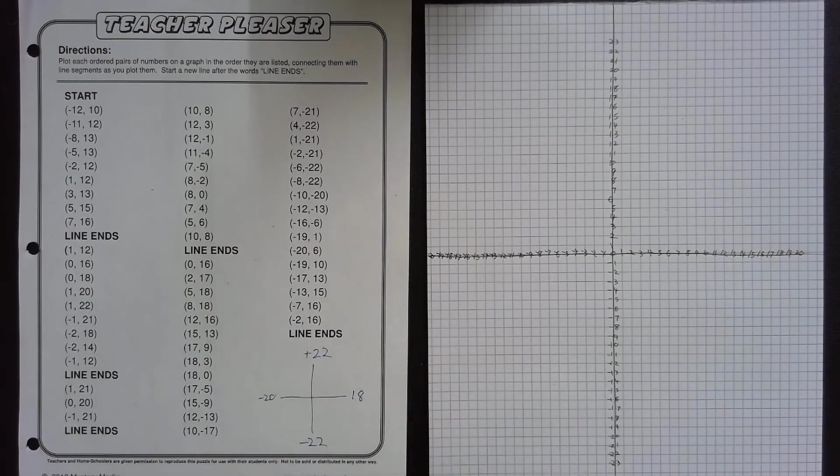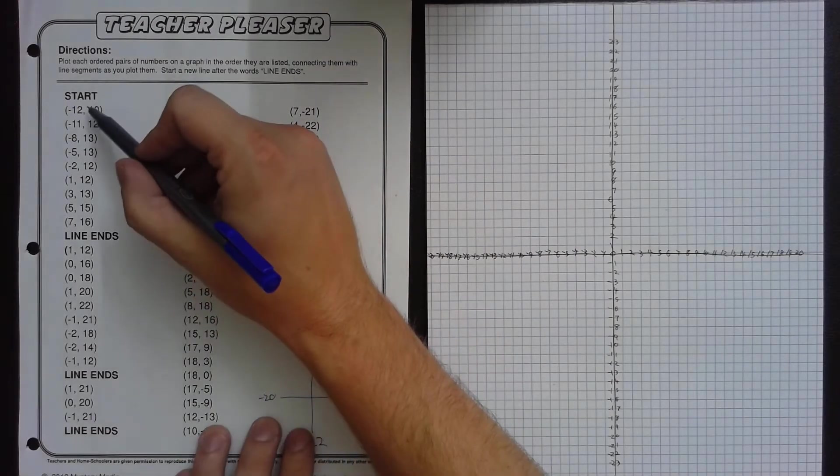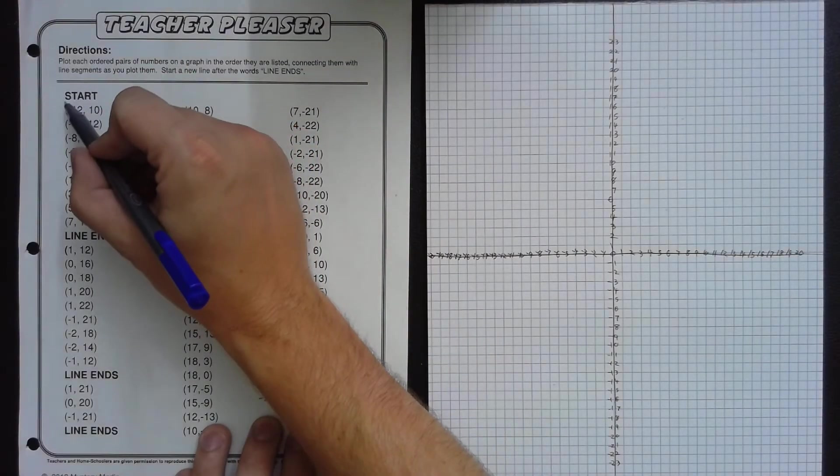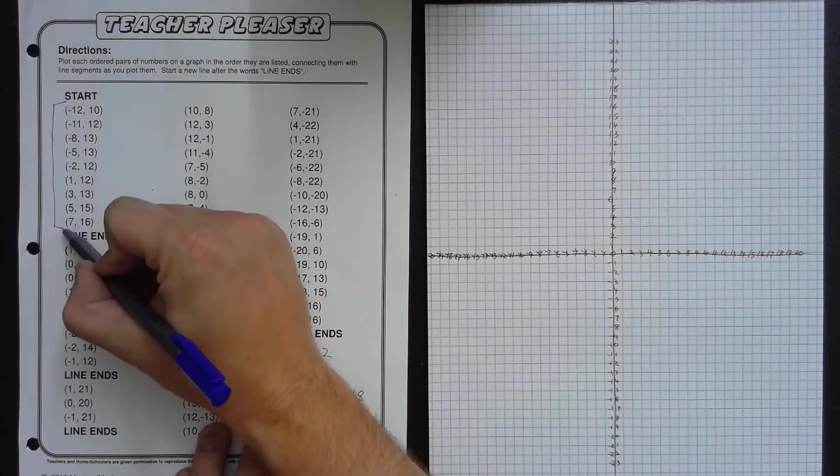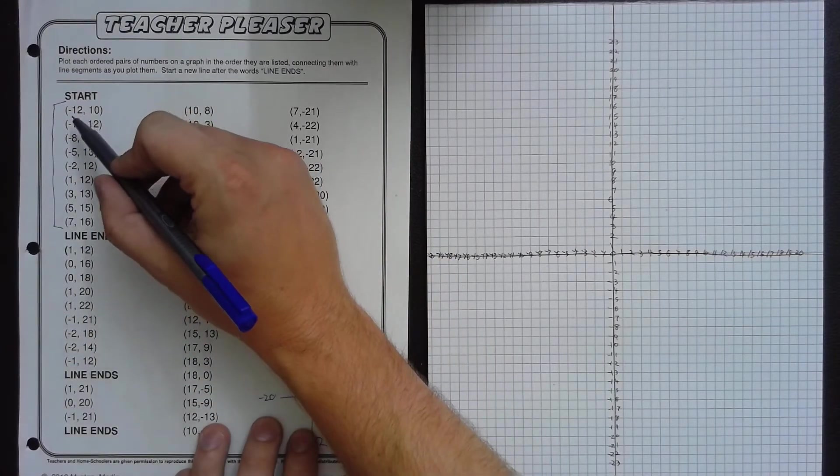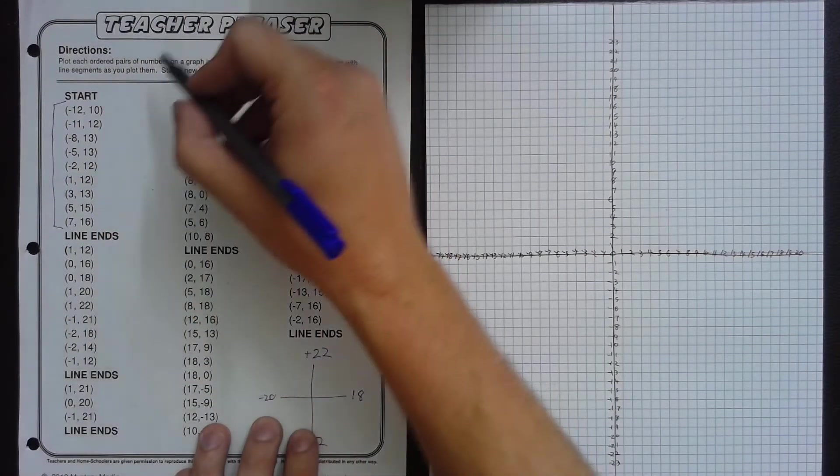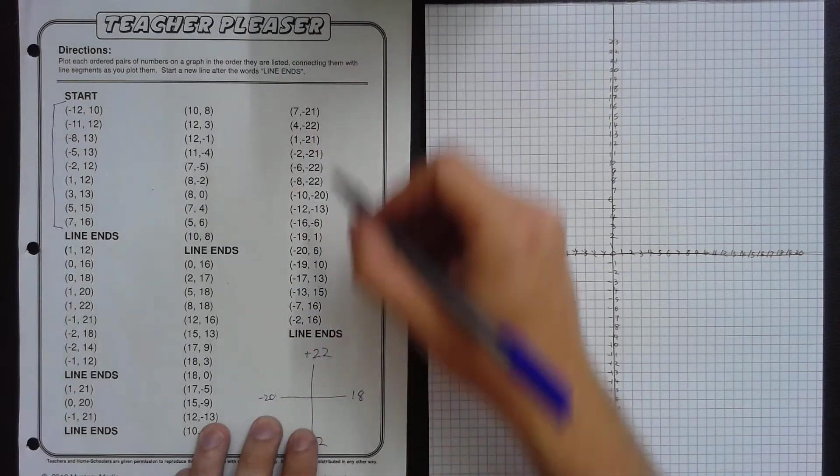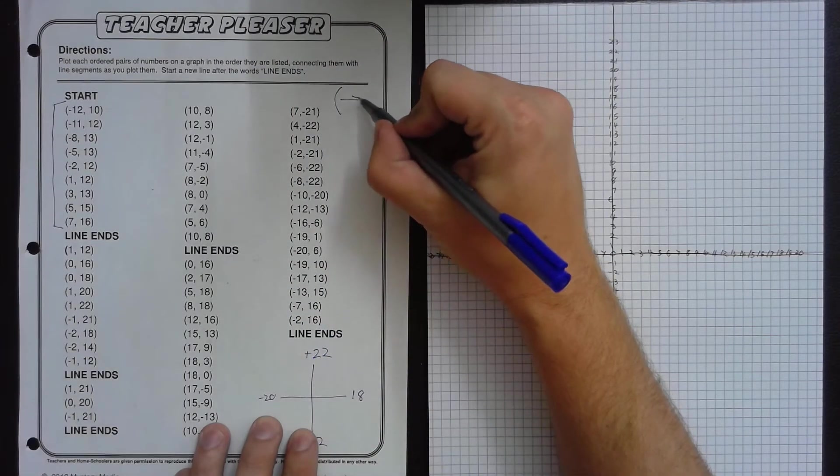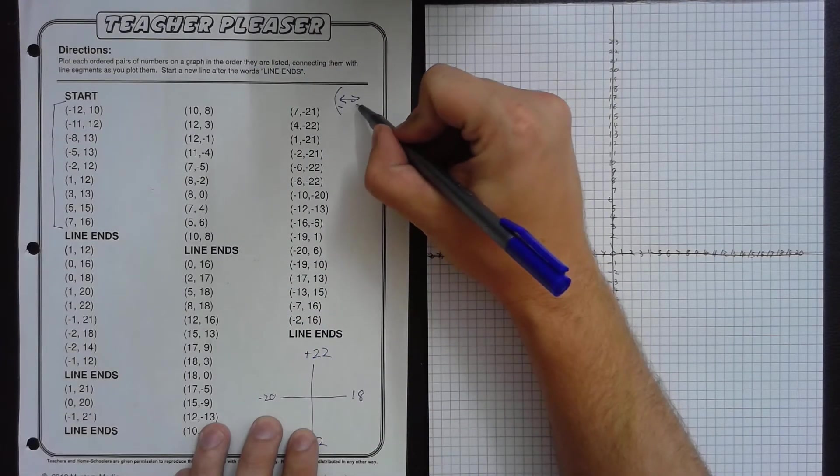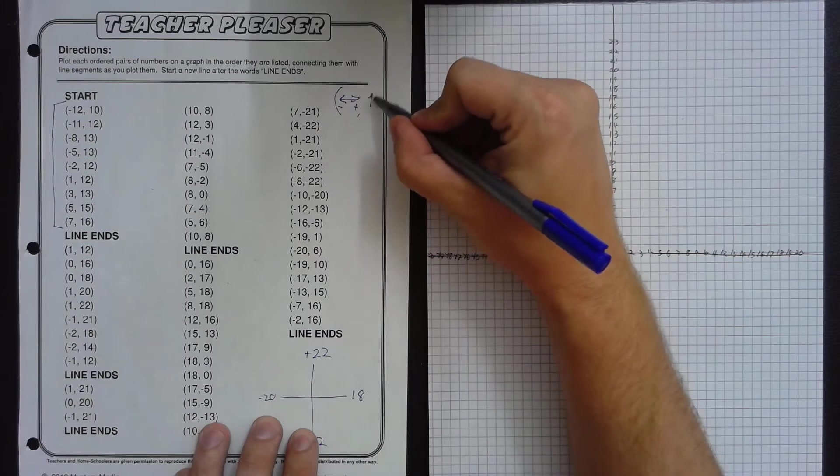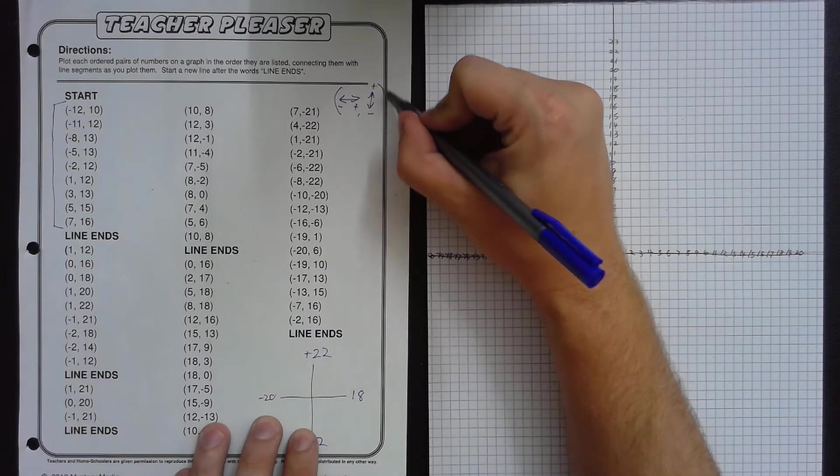So for starters, we're going to start with this section, and we're going to color code this in a kind of dark blue. So negative 12, 10. Remember, our first number tells us which way to go, going left and right. Negatives left, positives right. Second number tells us up or down, positives up, negatives down.